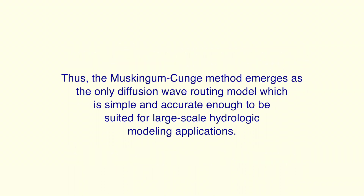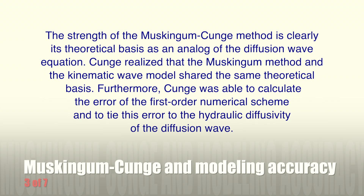Thus, the Muskingum-Cunge method emerges as the only diffusion wave routing model which is simple and accurate enough to be suited for large-scale hydrologic modeling applications. The strength of the Muskingum-Cunge method is clearly its theoretical basis as an analog of the diffusion wave equation.